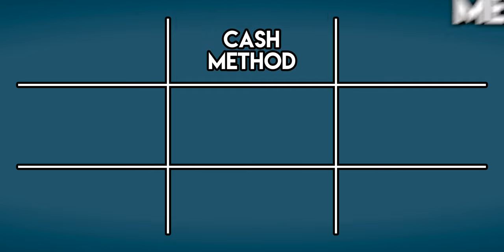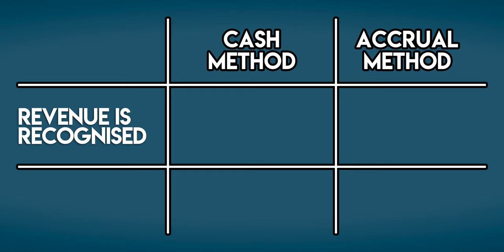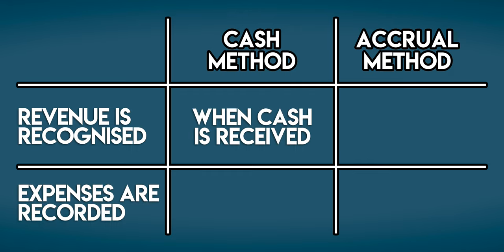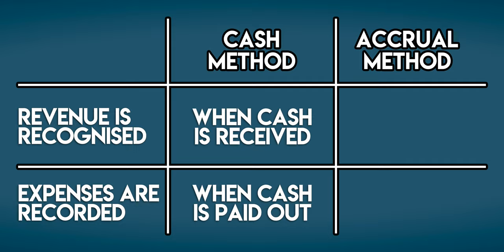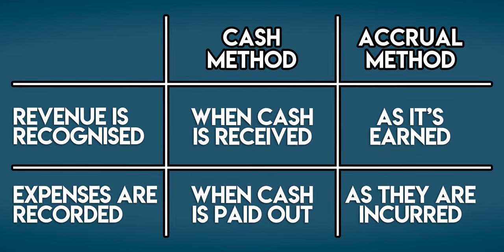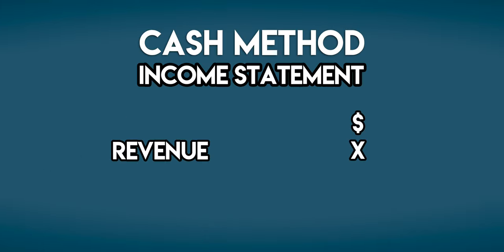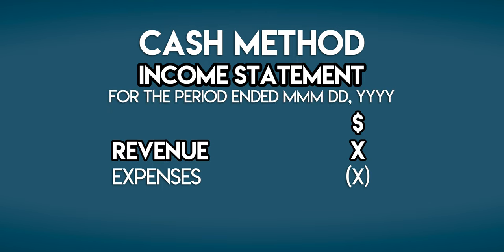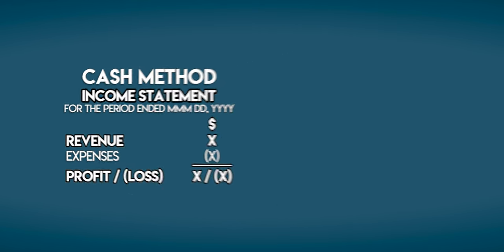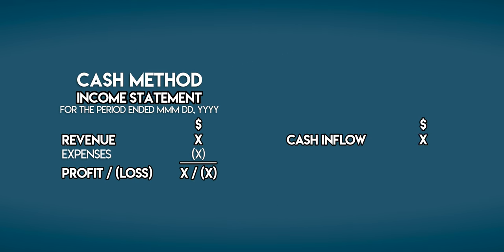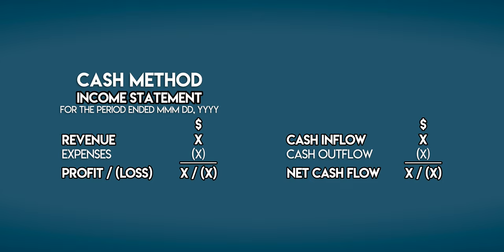In accounting there are two main methods for preparing your books: the cash method and the accrual method. With the cash method you recognise your revenue when cash is received and you record your expenses when cash is paid out. But under the accrual method you recognise revenue as it's earned and record your expenses as they are incurred. If you're cash accounting then technically you only have one financial statement: the income statement. It summarises your revenues and expenses over a period of time leaving you with a profit or a loss. But with the cash method, you recognise revenue when cash is received and record expenses when cash is paid out, leaving you with a net cash inflow or an outflow.